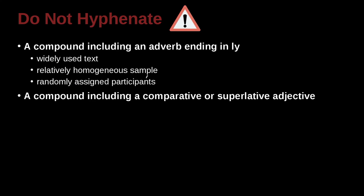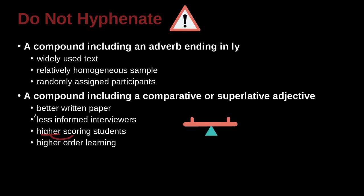A compound including a comparative or superlative adjective, such as better written paper, less informed interviewers, higher scoring students. So it's similar, but here what we're doing is we're saying higher, and this has its own meaning. So yes, it is higher scoring, this kind of one group, but this is modifying this idea. Less informed, better written paper. So you do not use a hyphen in this case because you're comparing things. Comparative words. Higher order learning, for example.